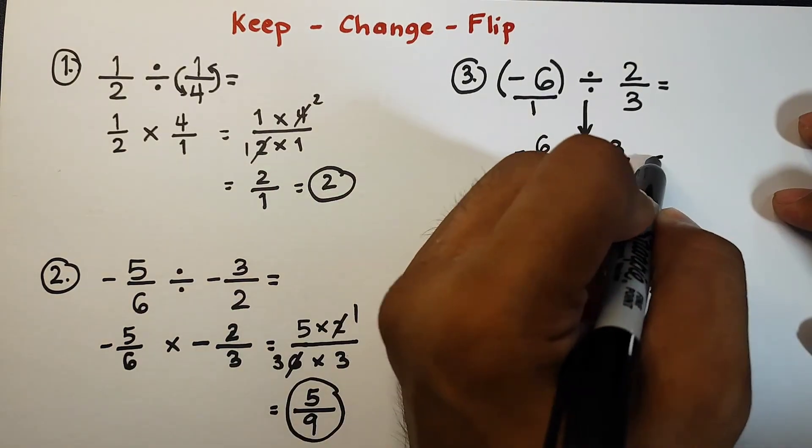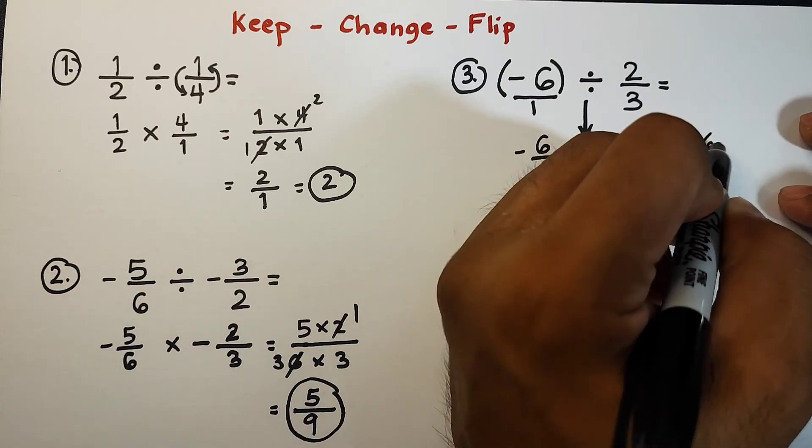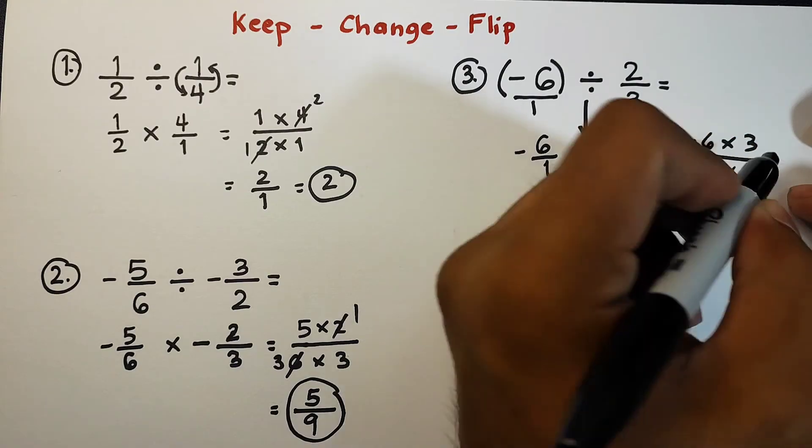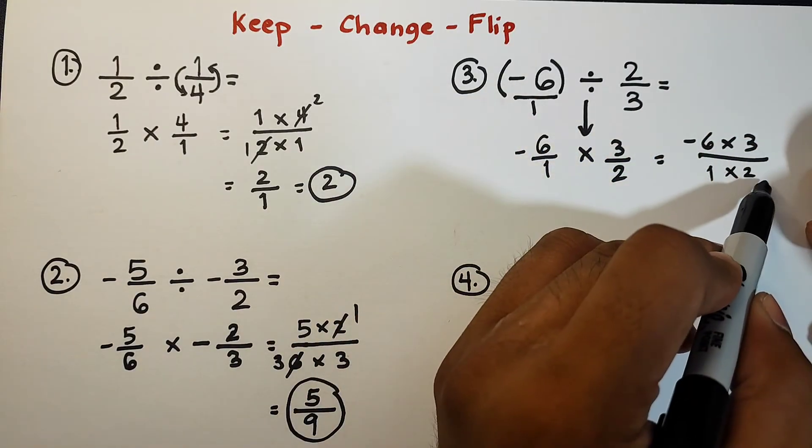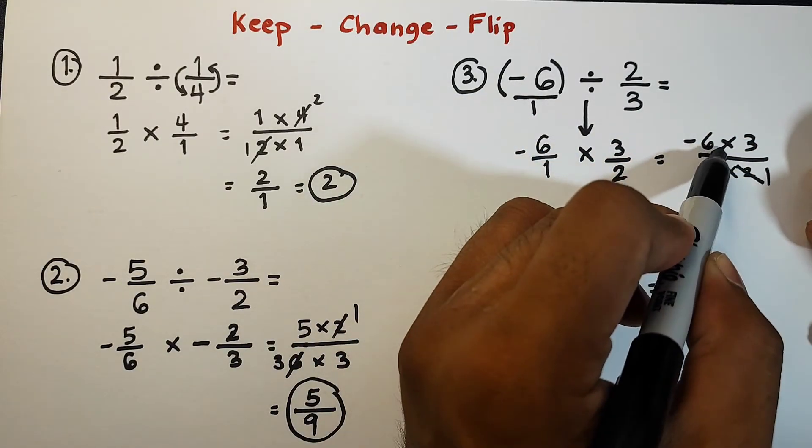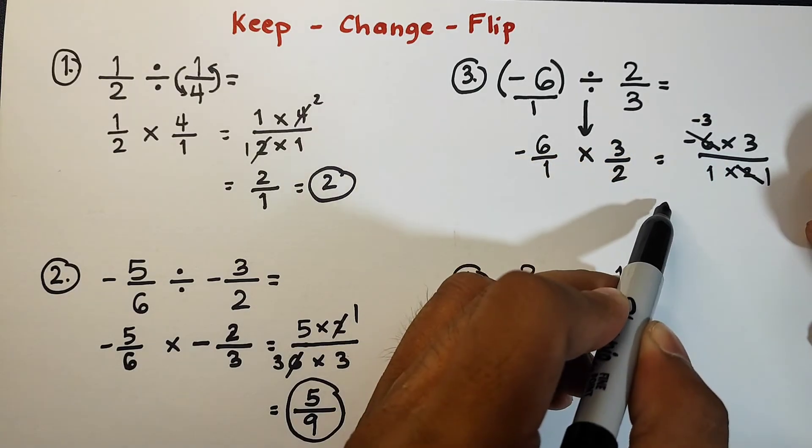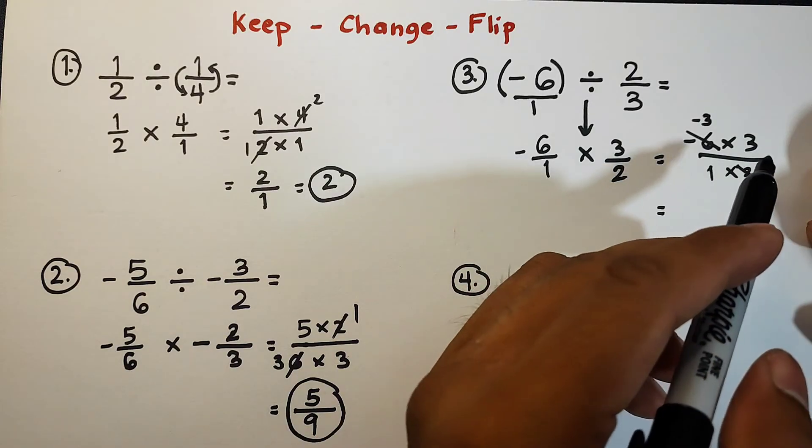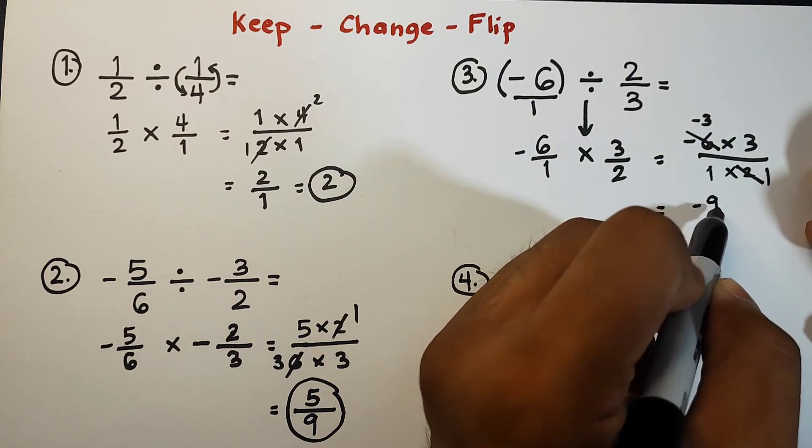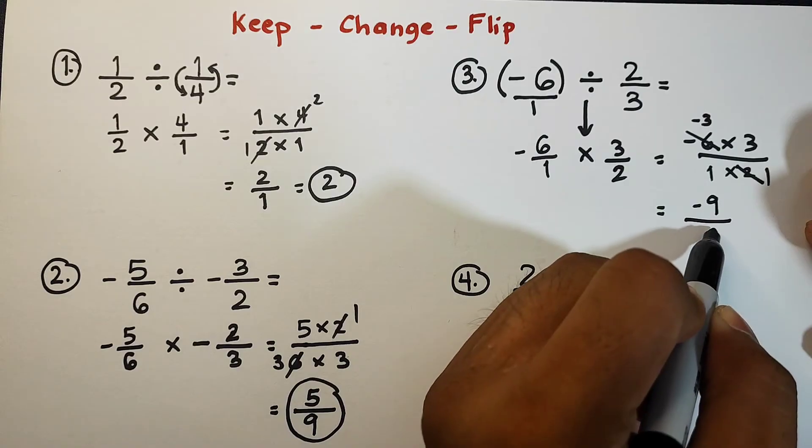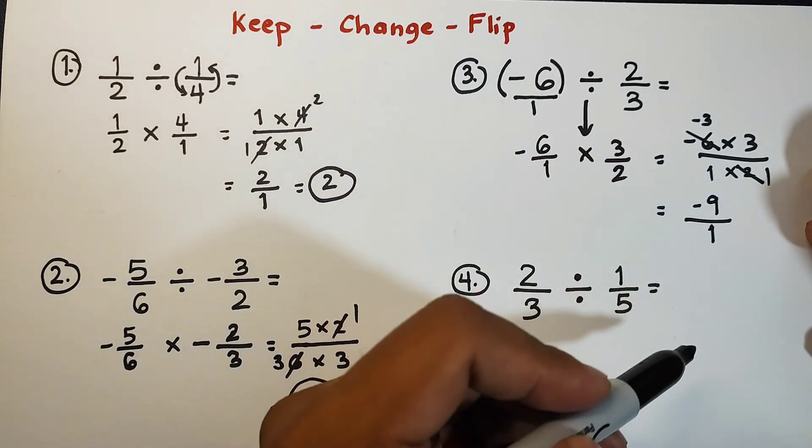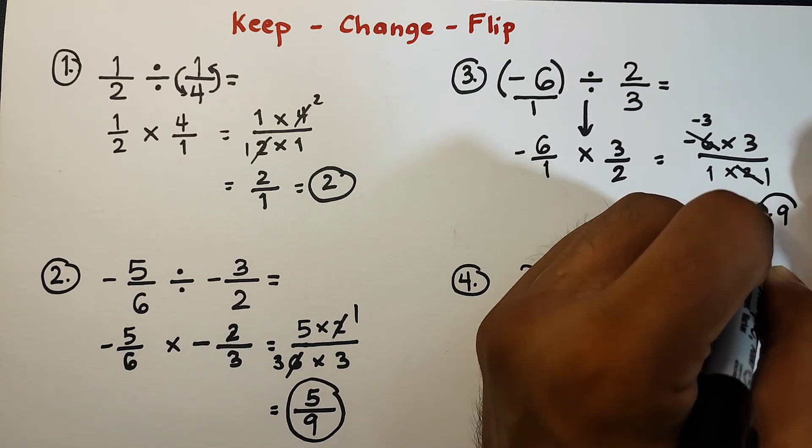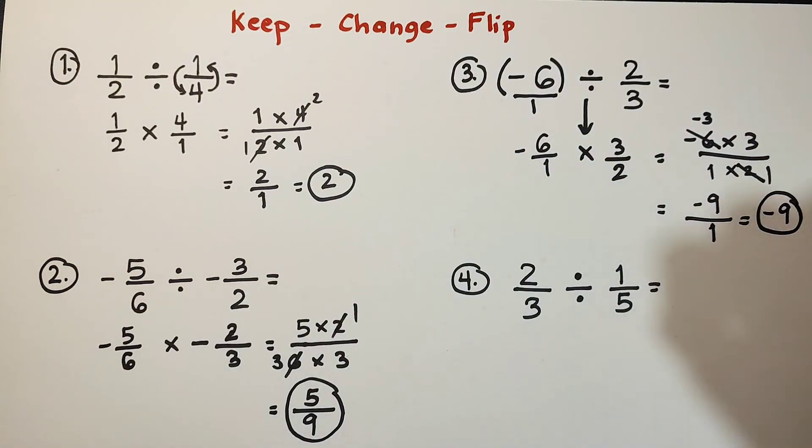So what's next here is to multiply negative six times three over one times two. So we can cancel out two, it will become one. We can cancel out negative six, it will become negative three. So what we have here is negative three times three, that is negative nine, over one times one, which is equal to one, and simplifying negative nine over one, that is negative nine. And this is the answer for item number three.